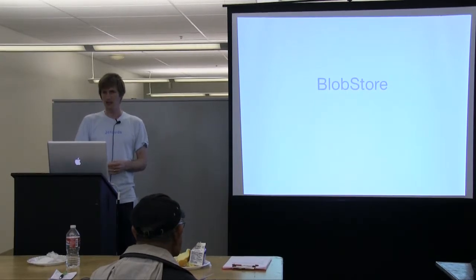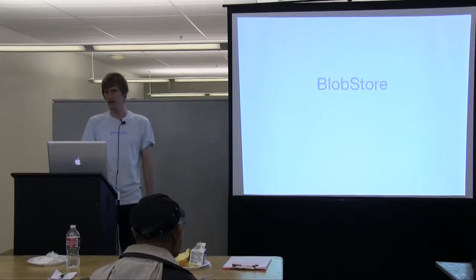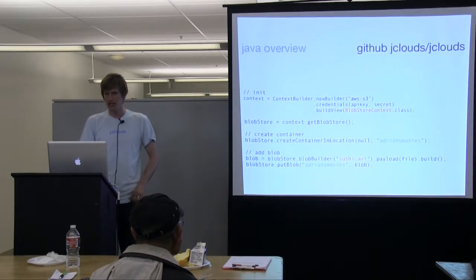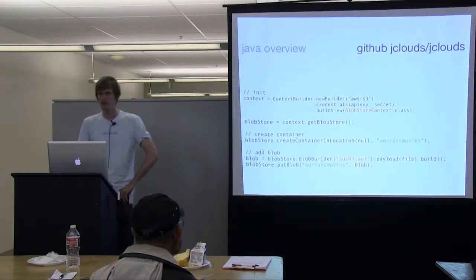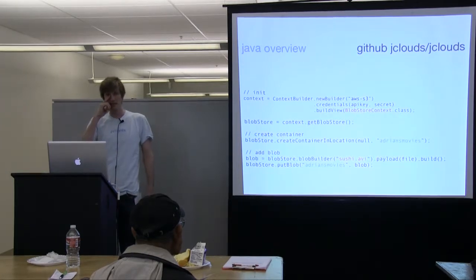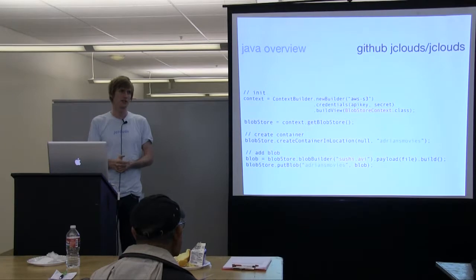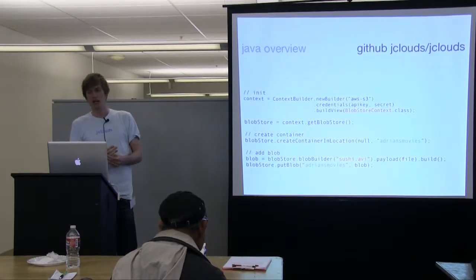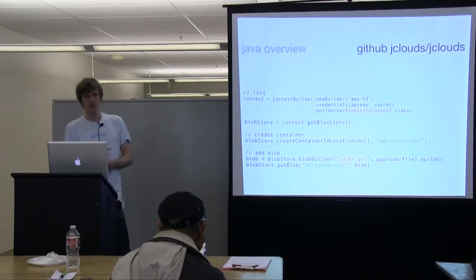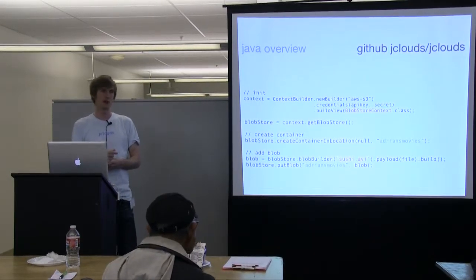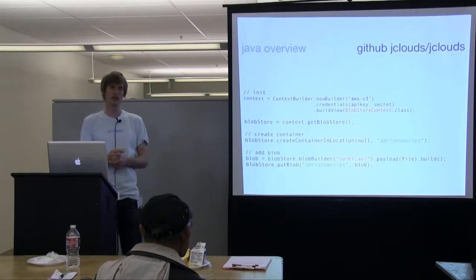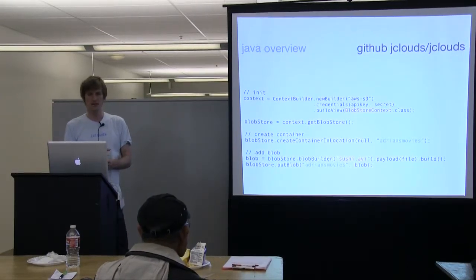The first API I'll show is blob store — key-value pairs. Key-value basically means you have a system that will allow you to assign a string and retrieve arbitrary bytes. There's no structure required, implied, or constrained. People use this for durability, or some use it as a primary data store for their application. A container basically separates some data from other data — it's just like a namespace.